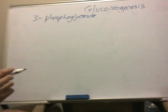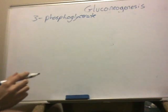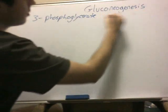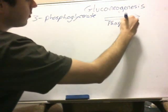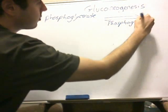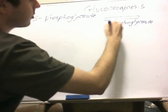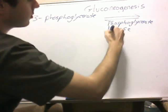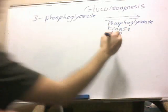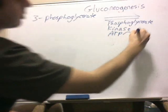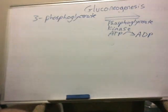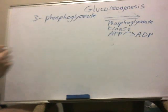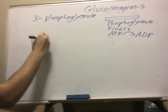And from 3-phosphoglycerate, we're going to use phosphoglycerate kinase, and we're going to use an ATP — adenosine triphosphate to adenosine diphosphate. From there, we're going to get 1,3-bisphosphoglycerate, which should look familiar from last time.